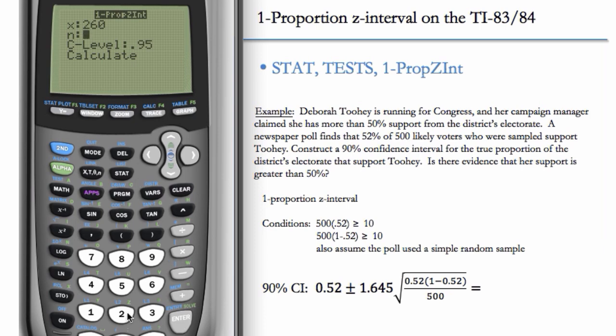So X is how many yeses: 260. N is the sample size of 500. We enter that there. Here, make sure to enter the desired confidence level—so 0.9 or 0.90—and then hit the down arrow and do calculate.